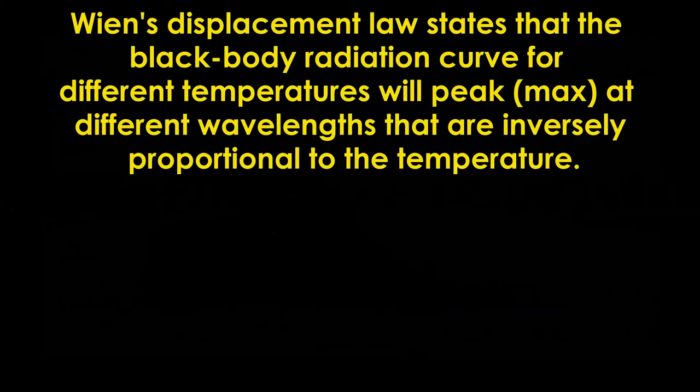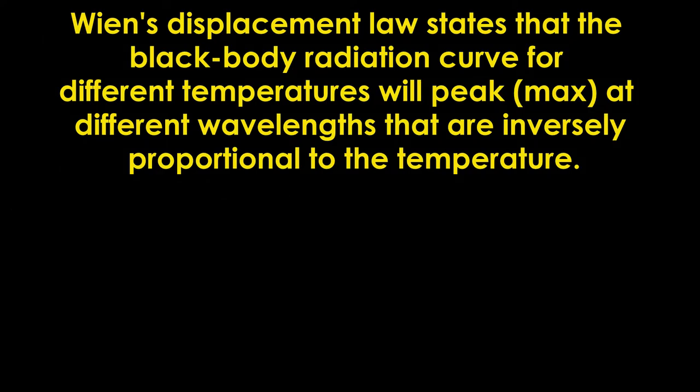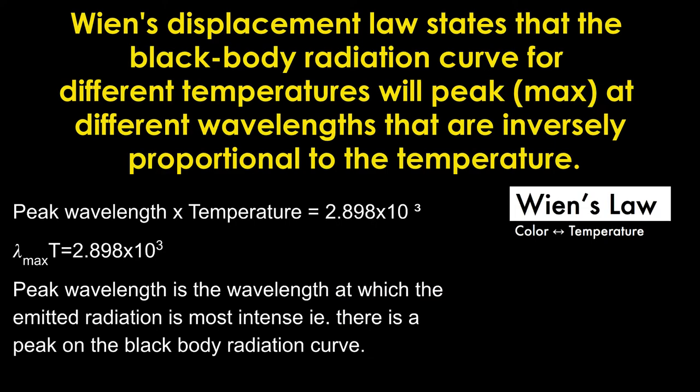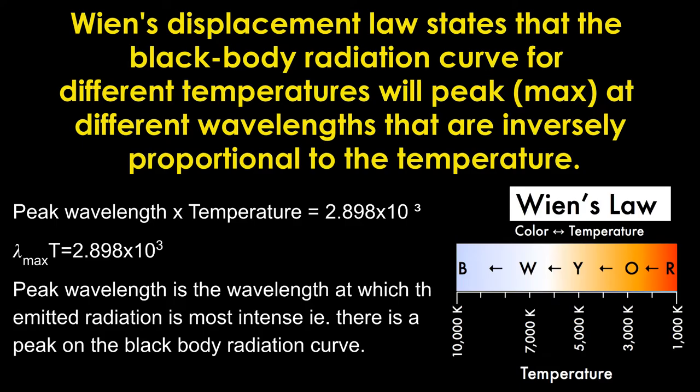Wien's displacement law, or Wien's law, is very simple. It shows the relationship between the color of a black body and the temperature of the black body. According to Wien's law, the product of peak wavelength denoted by lambda max and temperature is always constant, which is 2.898 times 10 to the power minus 3.